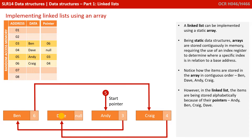Notice how the items are stored in the array in contiguous order: Ben, Dave, Andy and Craig. However, in the linked list, the items are being stored alphabetically because of their pointers: Andy, Ben, Craig, Dave.